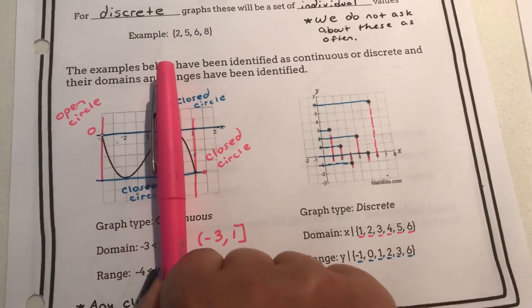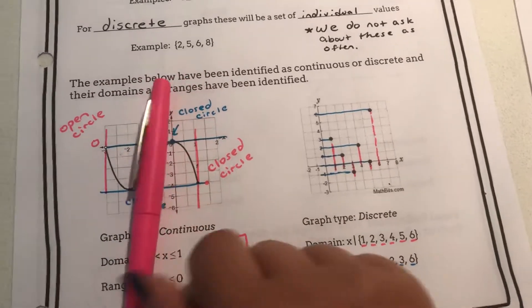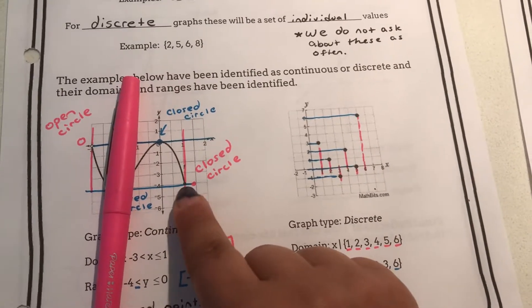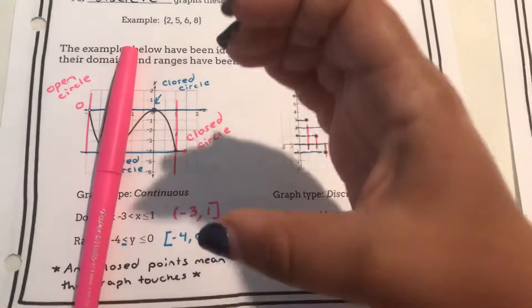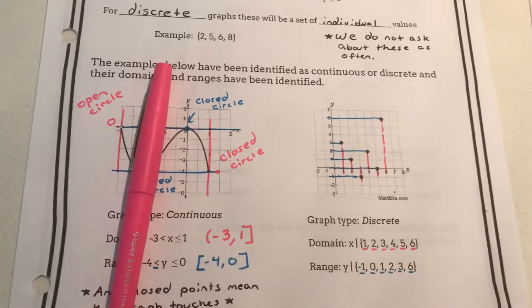As I continue to move I continue to touch the graph. This graph is continuous and stops at one with a closed circle. I just tried to draw it to the side. And therefore I have a bracket. Hard stop. The graph exists at one, x equals one.